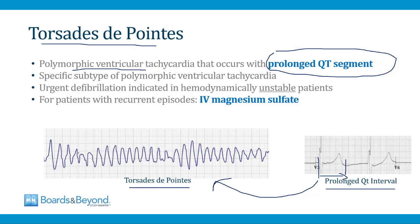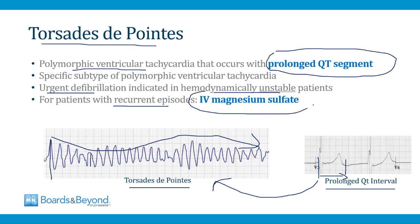Torsade de Pointes means 'twisting of the points' — the QRS complexes go from very large to very small, believed to look like a twisting of the points. It's treated like any form of ventricular tachycardia: if the patient is hemodynamically unstable, administer urgent defibrillation. The one special thing about Torsades, especially for your boards, is that when patients have recurrent episodes, you can treat this with intravenous magnesium sulfate. For reasons that are poorly understood, magnesium sulfate works to suppress Torsade de Pointes — this is the only arrhythmia where we use it.